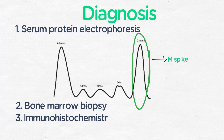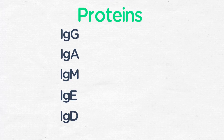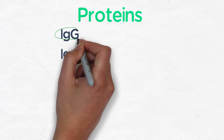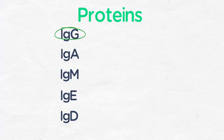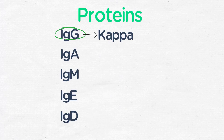By immunohistochemistry, you want to find that those are plasma cells — CD38 positive, CD138 positive, and CD19 negative. They usually secrete one type of clonal protein in the peripheral blood. We have five different types: IgG, IgA, IgM, and so on. The most common is IgG, and the most common light chain is Kappa. So IgG Kappa is the most common type of protein that we see in our patients.